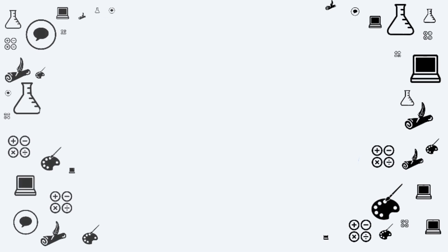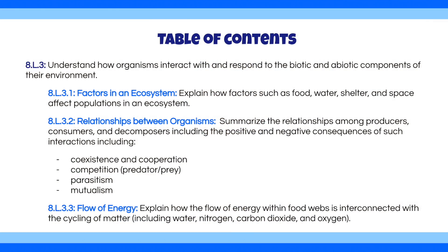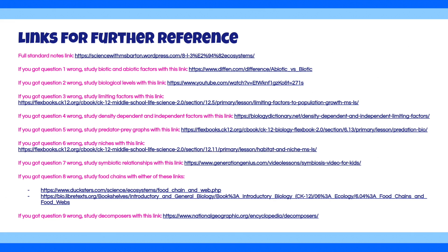Hi everyone, my name is Anika and welcome back to 8th grade science with AllSTEM. Today's video covers the ecosystem standard. It talks about the factors of an ecosystem, the relationships between organisms, and the flow of energy. Each of our review questions is time-stamped, so you can skip the explanations for questions you feel confident in and move directly on to the next timestamp. Make sure to check out our links for further reference page at the end of the video for extra practice — it's linked in the description box. Let's get started with the first question.